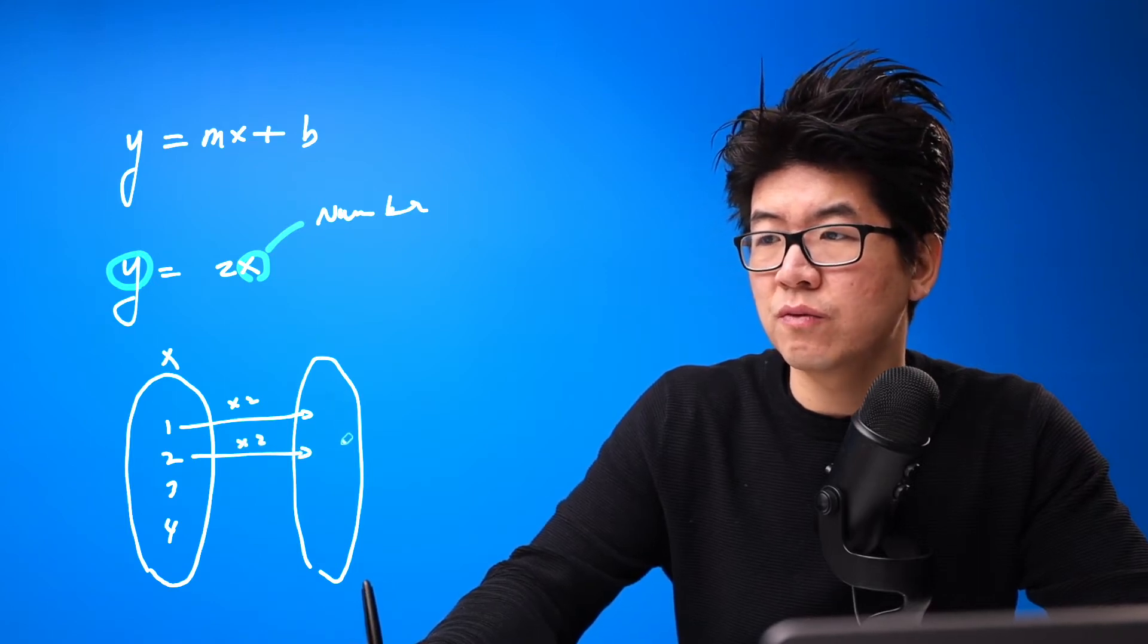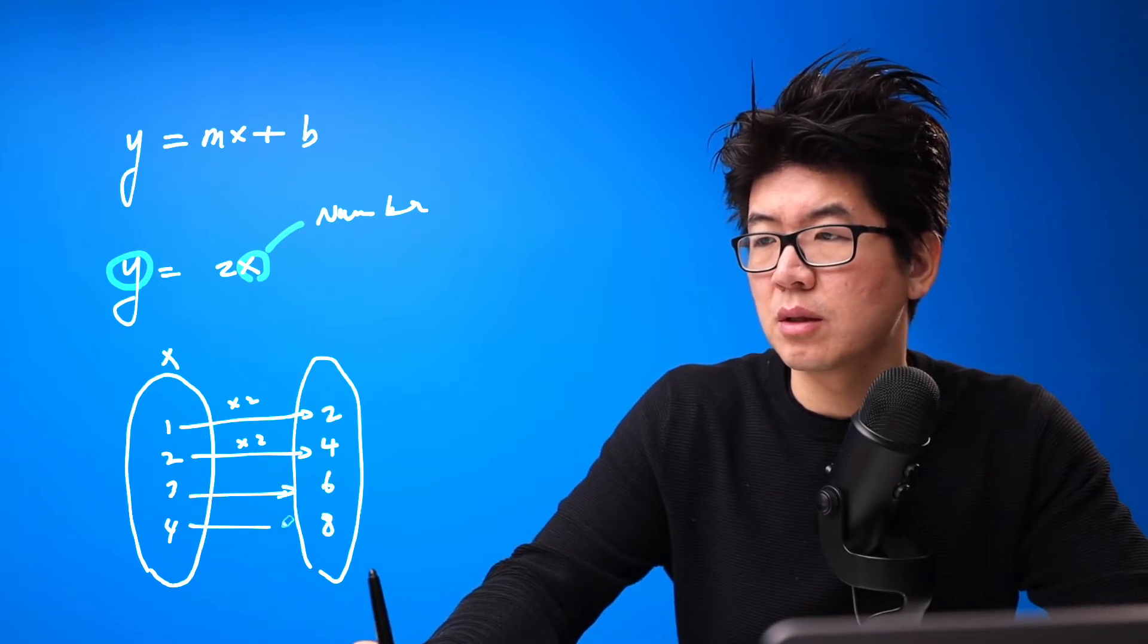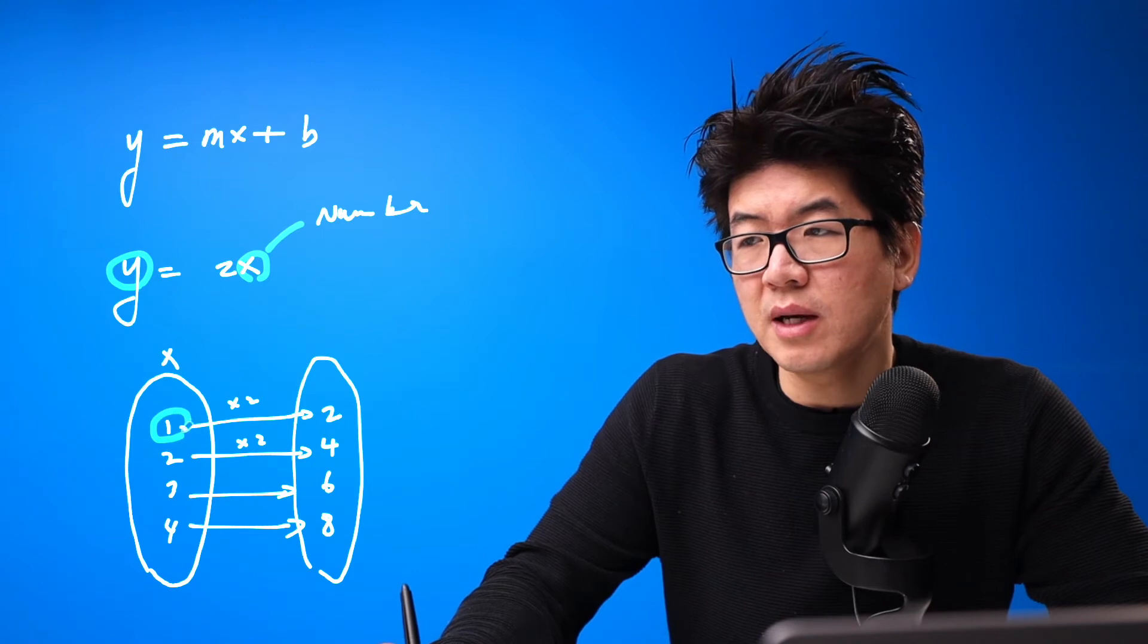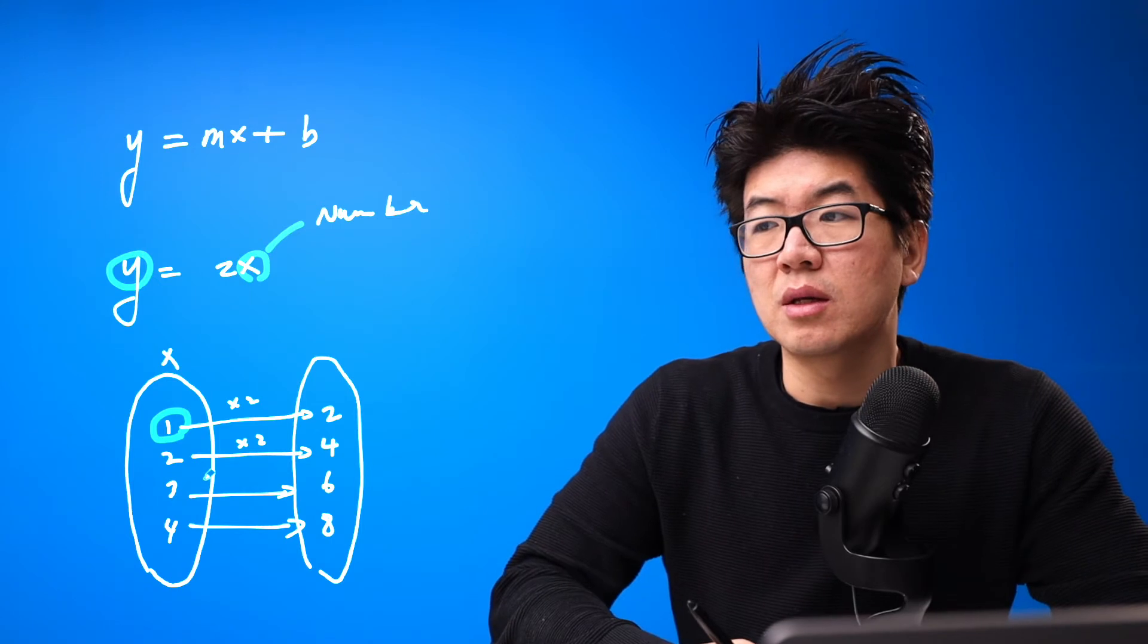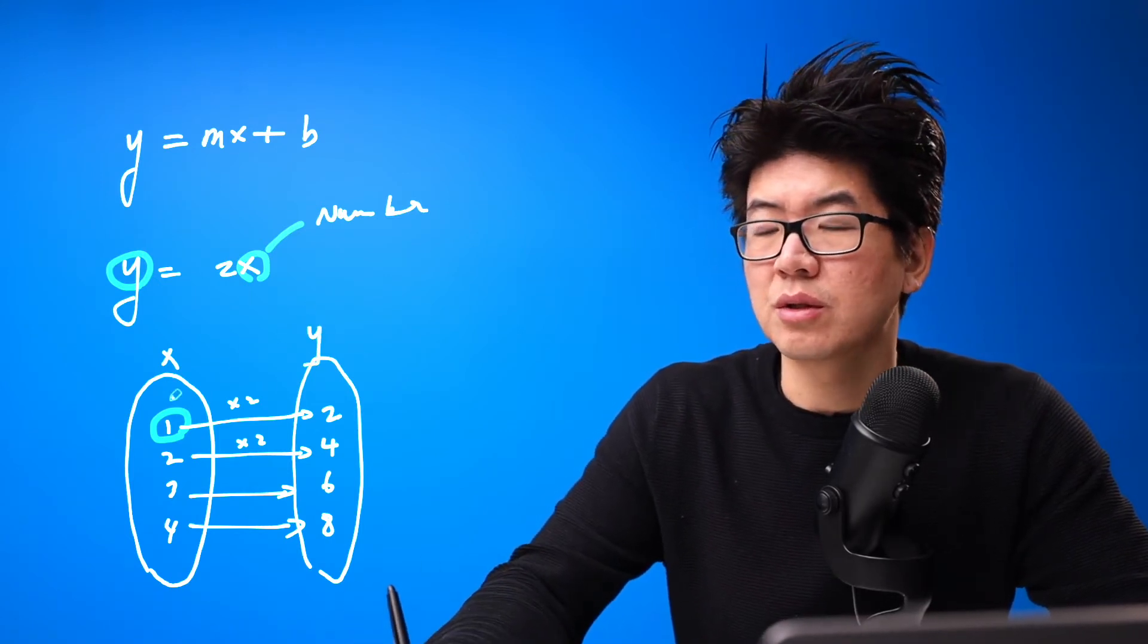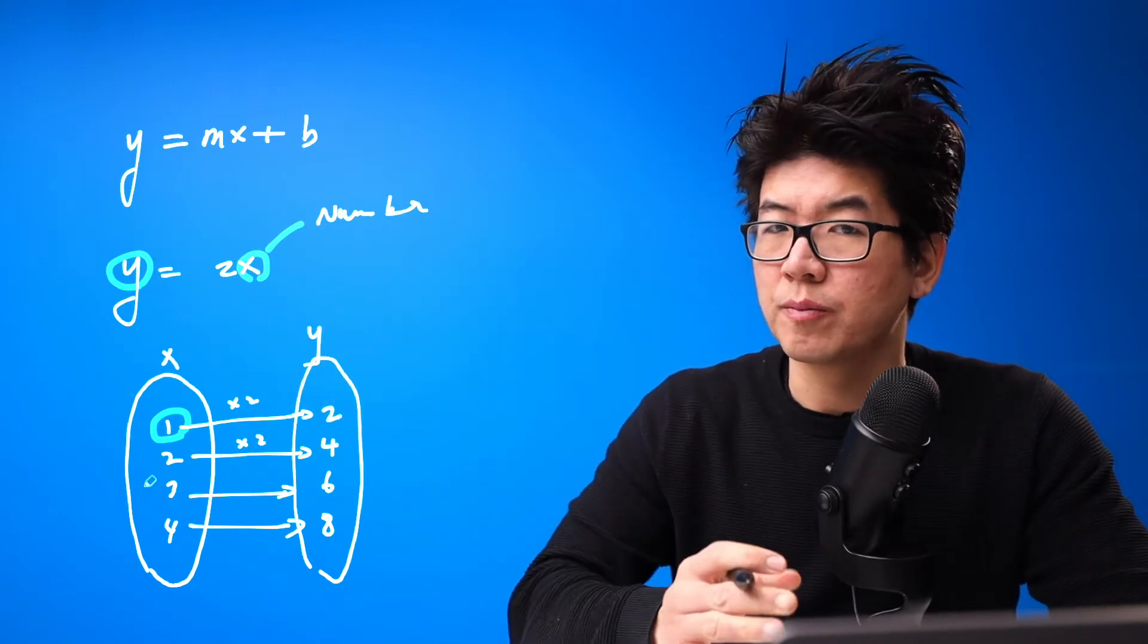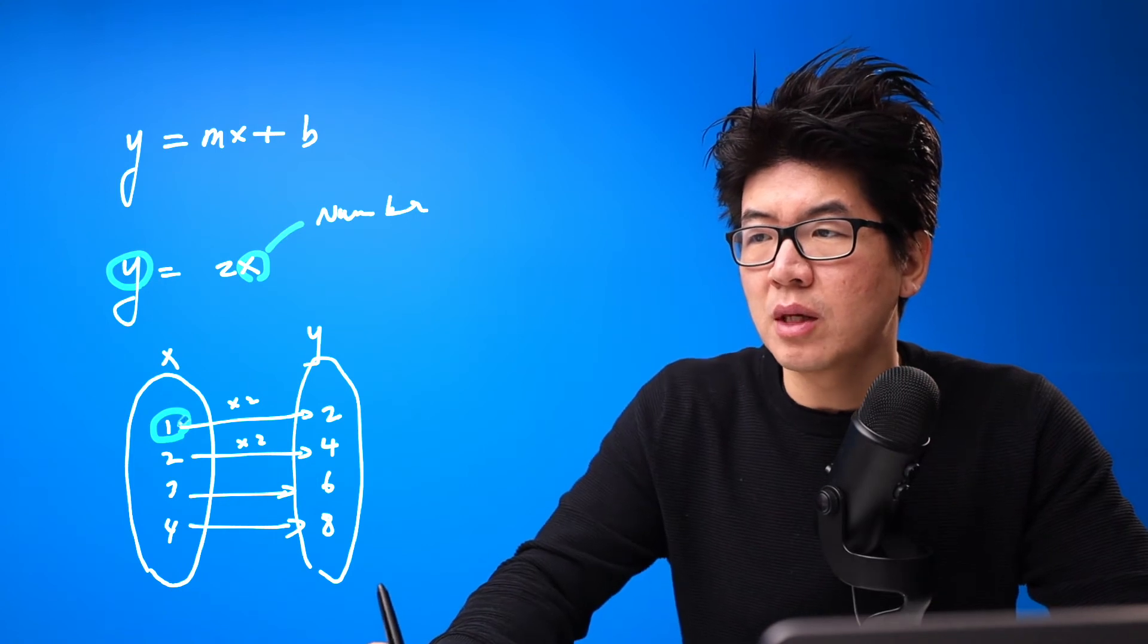Times by 2, times by 2, and so on to get 2, 4, 6, 8. This rule of assigning the x value to the y value is called a function. Basically, a function is a way to assign a group of numbers to another set of numbers with a specific rule.